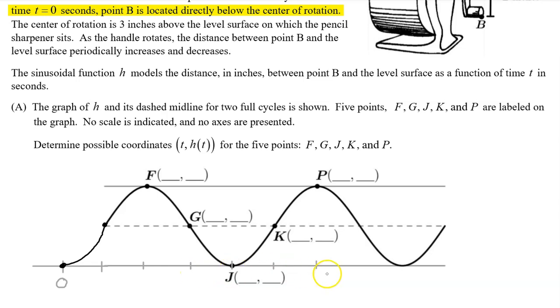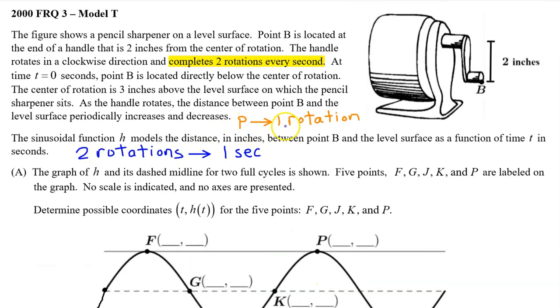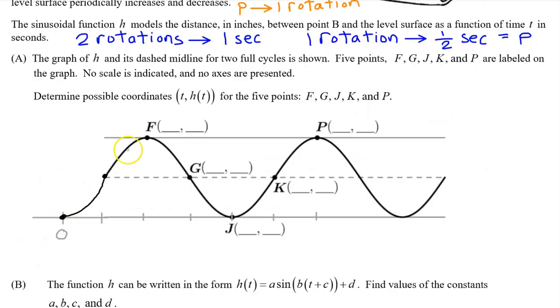We will need the period to find the other input values. A period is the duration of one rotation. We are told that the handle completes two rotations every second. But how long is one rotation? We can find that by dividing both sides by two. One rotation will take one half of a second. So that is the period. One full cycle goes from zero to point J. So point J is at one half second. Half of one half is one fourth. So this input value is one fourth. Half of one fourth is one eighth. So that's this input value. The third input value is going to be triple this. In other words, the third input value is three eighths.